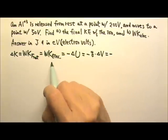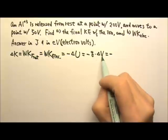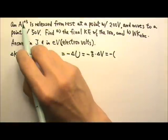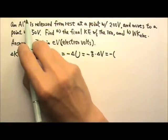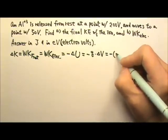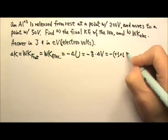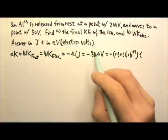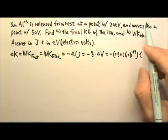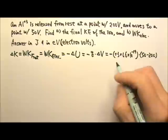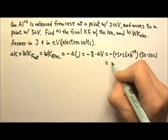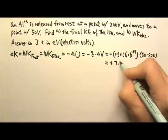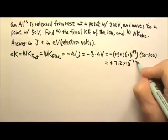Since we care about whether this is positive or negative, we need to be careful with the signs and plug in the sign for the charge. The charge is positive 3, meaning this ion has a charge of positive 3e — positive 3 times the elementary charge, 1.6 times 10 to the negative 19th coulombs. Delta V is the final V minus the initial V, so it's 50 minus 200. The two negatives cancel, giving positive 7.2 times 10 to the negative 17th joules.